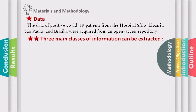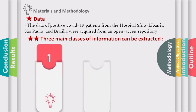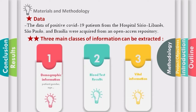For materials and methodology, an available dataset was acquired from an open access repository. It is supplied from the Hospital Sírio-Libanês, São Paulo, Brazil. There are 1,925 samples gathered from 385 patients, and each patient has five records, along with 231 columns containing the features. There are three main classes of information extractable from this dataset: demographic information, blood test results, and most importantly for us, vital sign information.